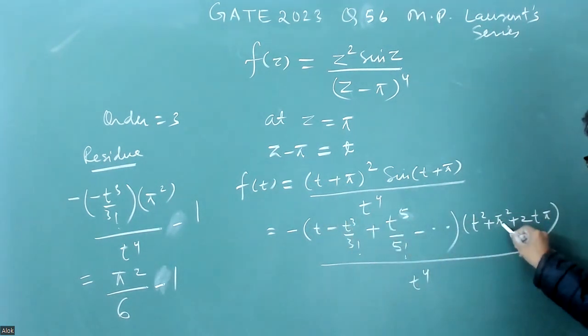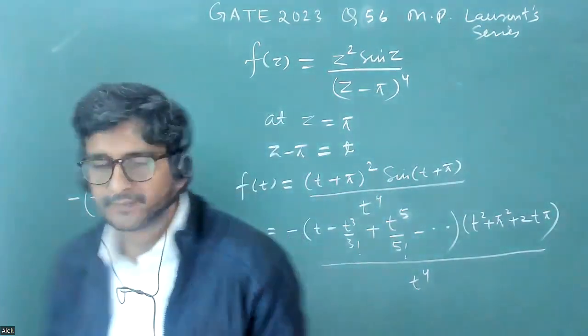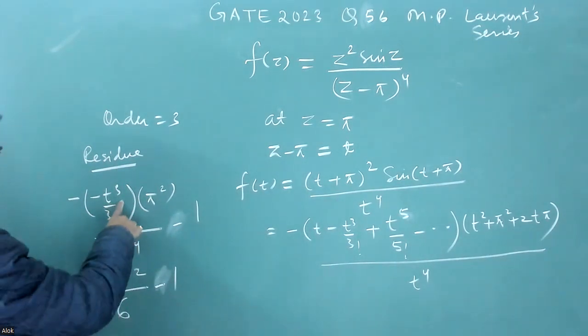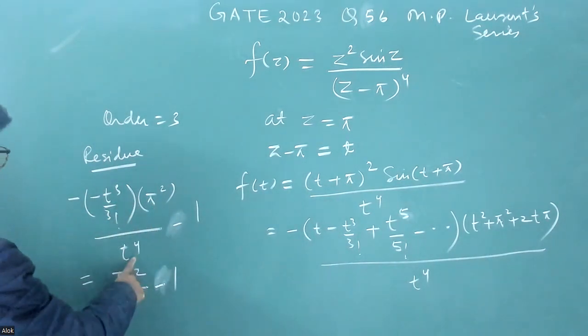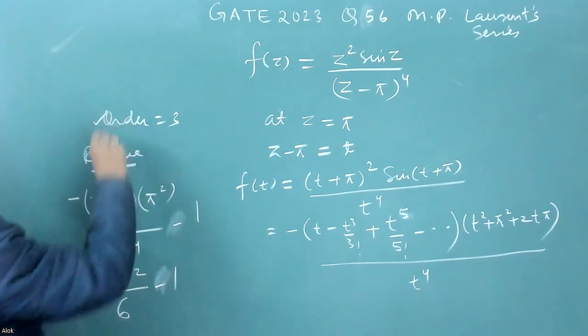When this constant is multiplied by this, you will get minus t cube by 3 factorial into pi square by t to the power 4. This will give us t to the power 3. That will be the order.